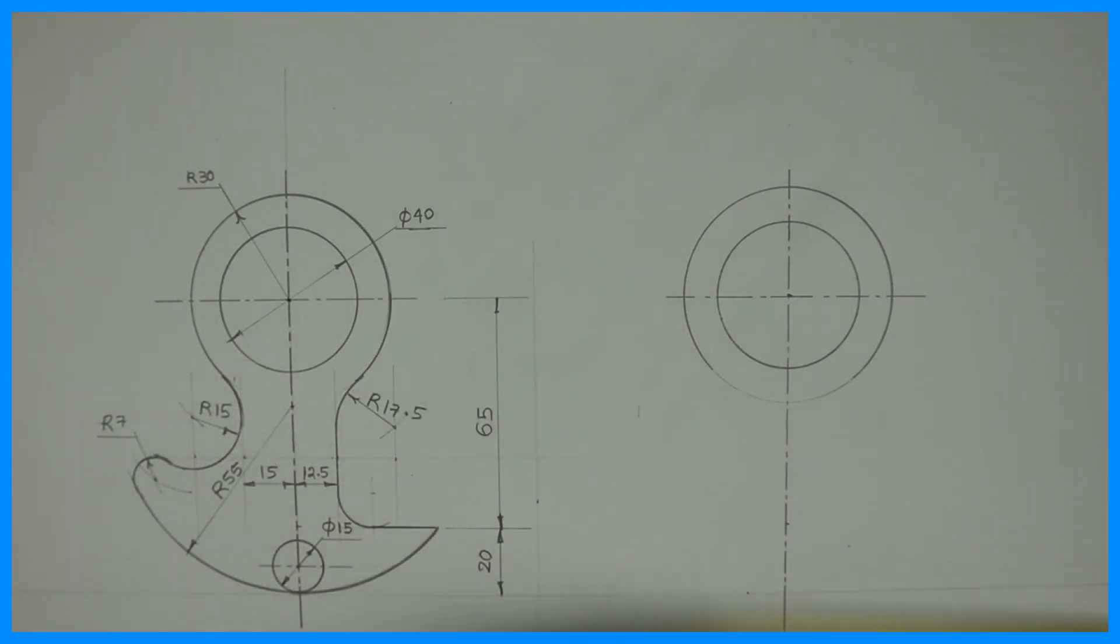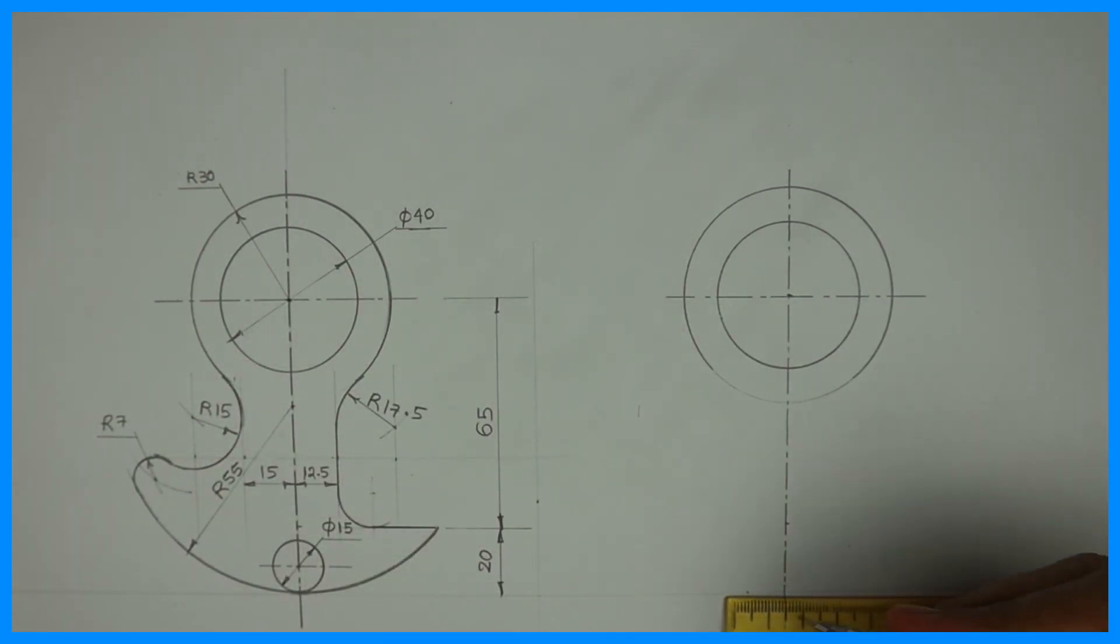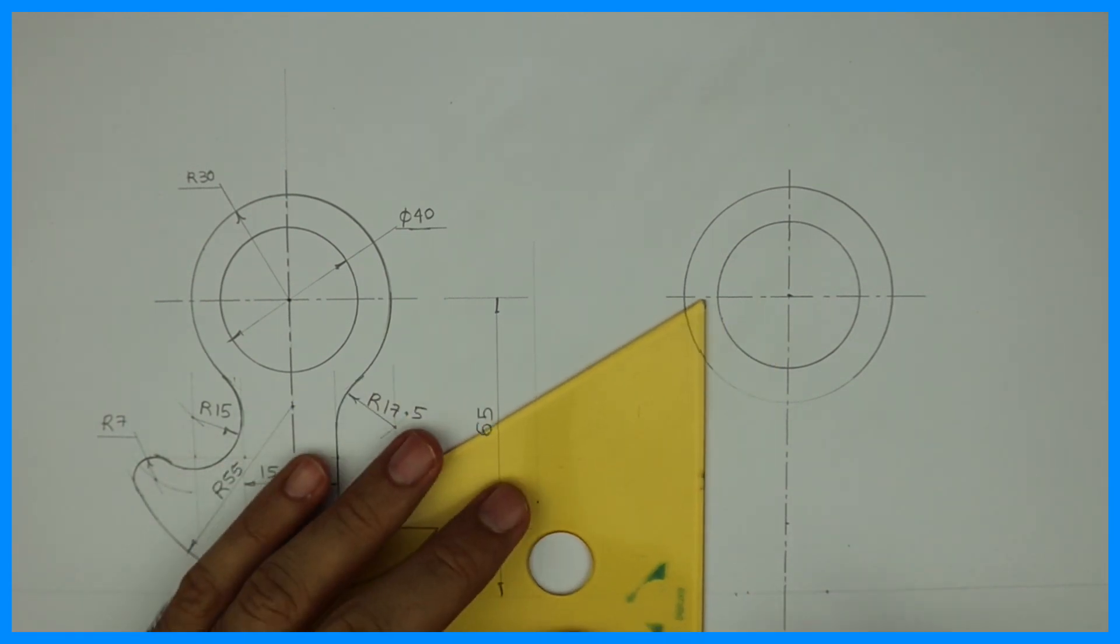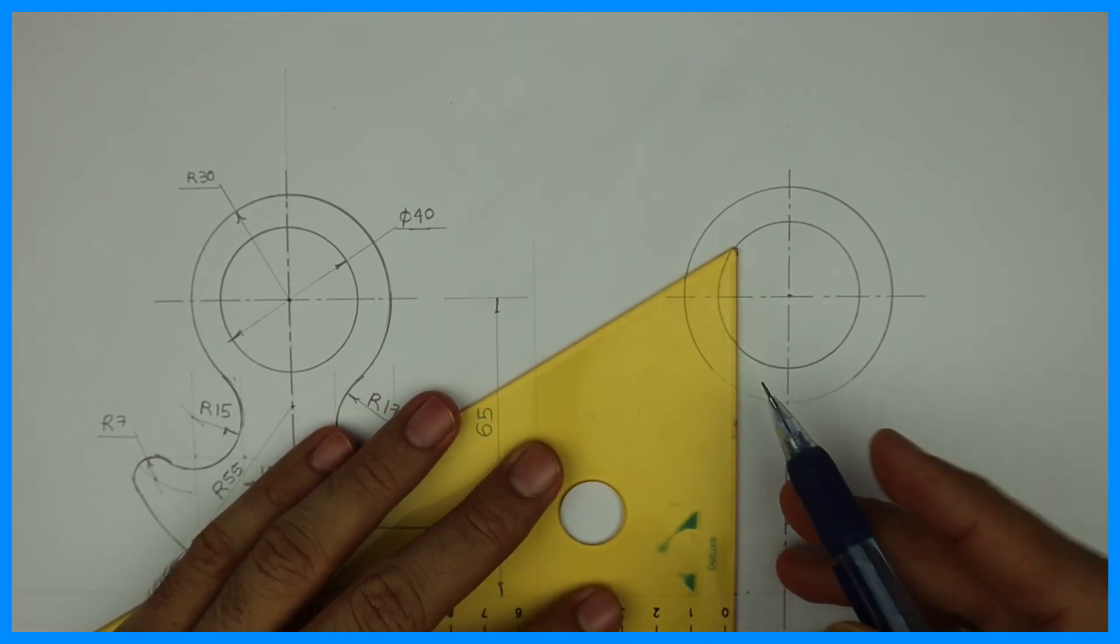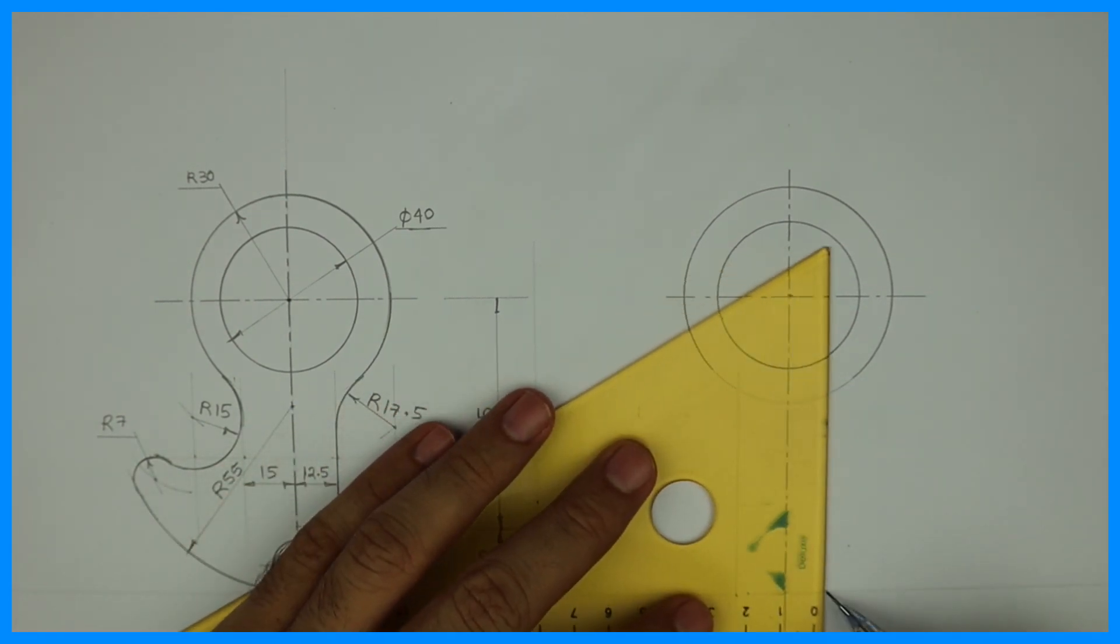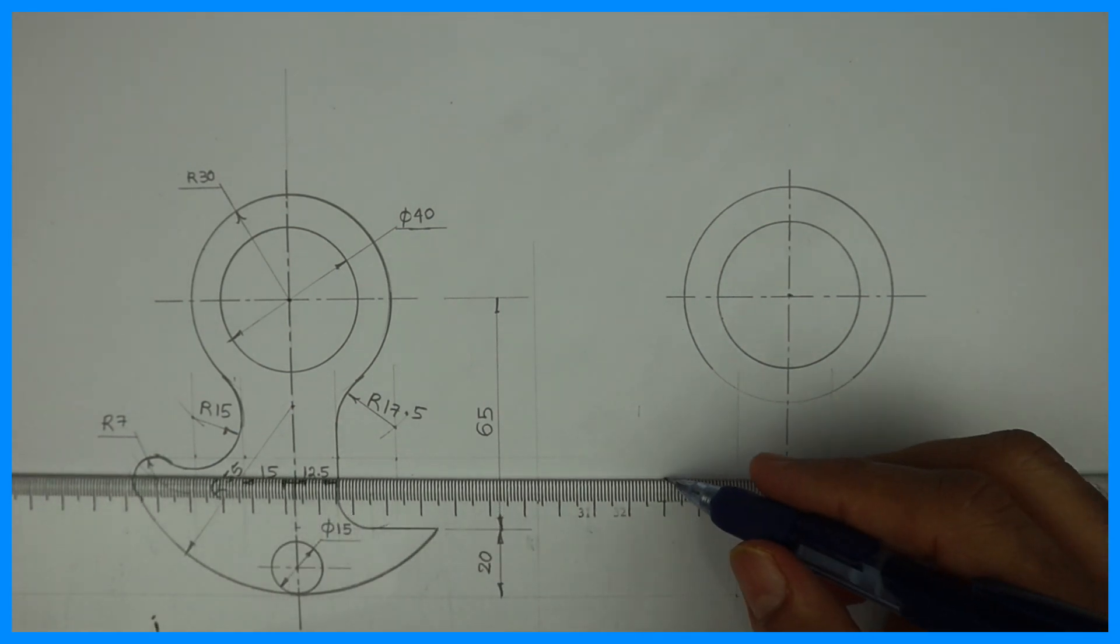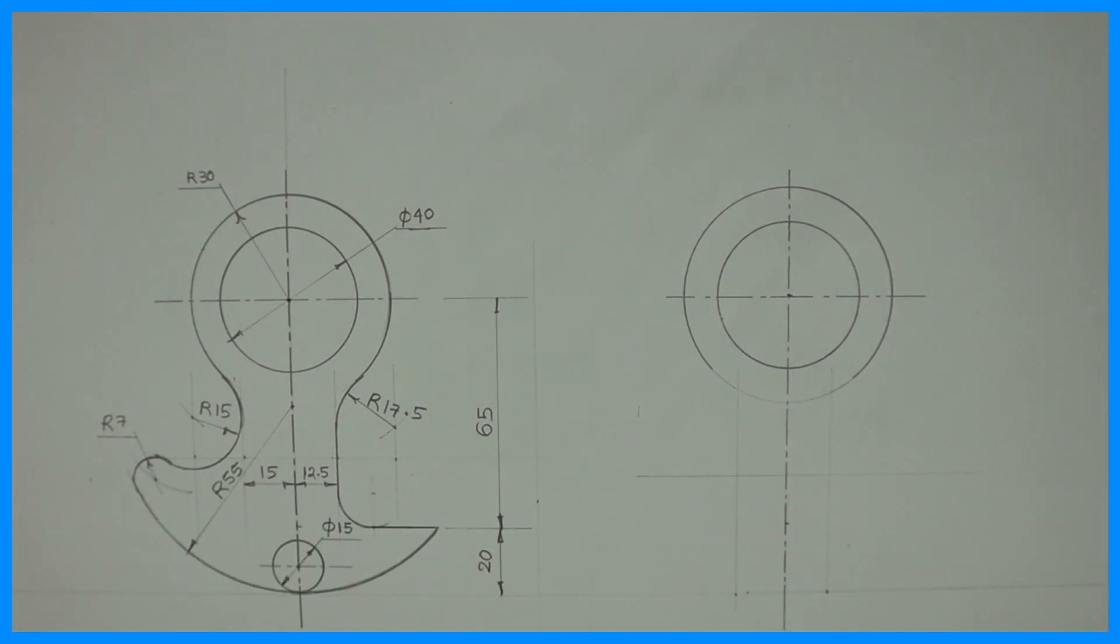After that if you see this is 15 and 12.5. So you take 15 on the left side and 12.5 on the right side and you draw vertical lines. Then you draw one random horizontal line.